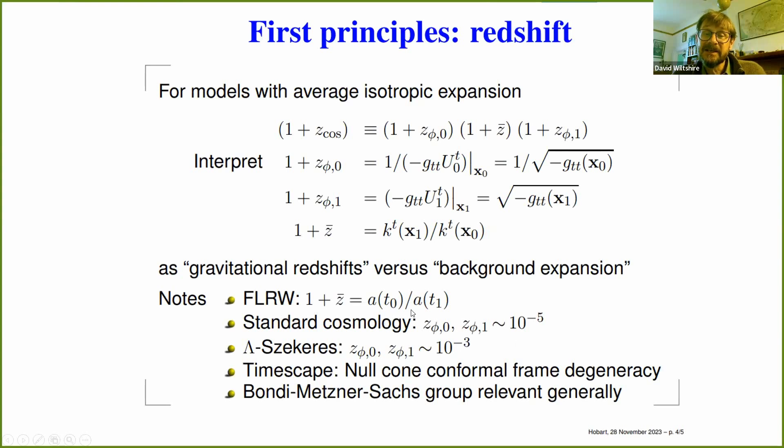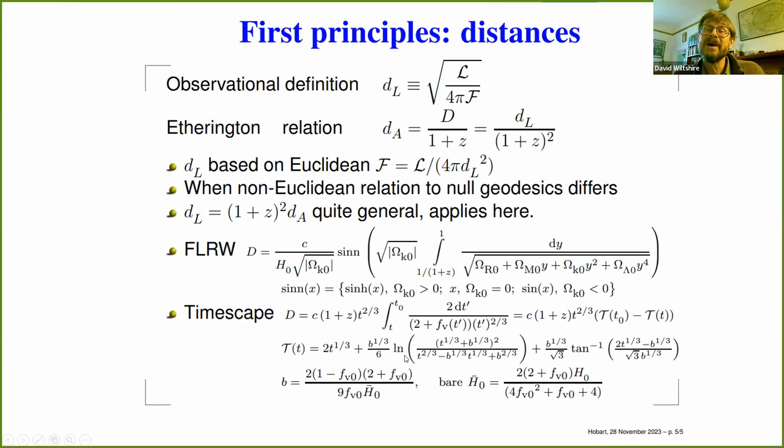I seek to answer those in a precise way, and understanding that actually involves things like the Bondi-Metzner-Sachs group. And so there is a degeneracy, and the degeneracy you can actually probe. I'm not doing that stuff in this talk.